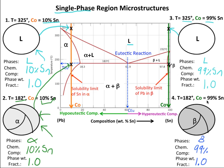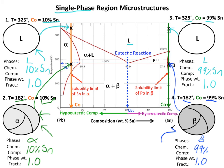We are given the same overall composition of 99% tin, now 1 degree below the eutectic temperature, putting us at this x on the phase diagram. This means we are in the single-phase beta region. The phase present is beta, the chemical composition is 99% tin, and the phase weight fraction is 1.0. Here is what the microstructure of single-phase solid beta looks like — remember that beta is the tin-rich solid phase. It is polycrystalline, and because it is a solid, we see some grains appear.